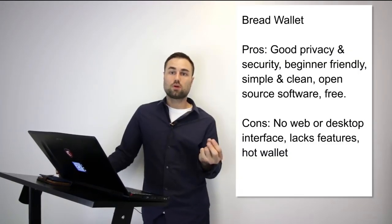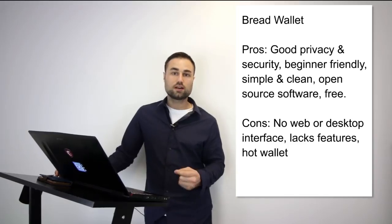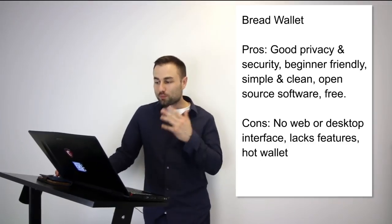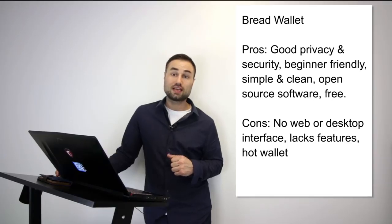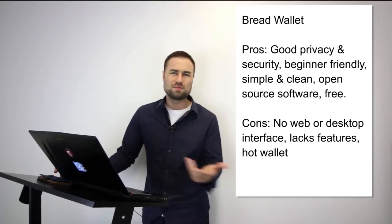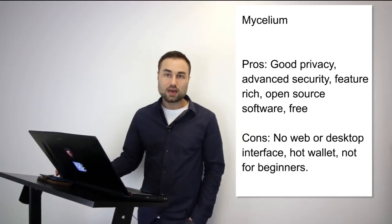Now for the actual recommendations. First is the Bread Wallet — a simple wallet literally made for a child, the user interface is that easy. It's specifically just for Bitcoin. The pros: very good privacy, beginner-friendly, open source, free, simple and clean. The cons: no web or desktop interface, lacks features, and it's a hot wallet with less security. For day-to-day Bitcoin transactions — maybe keeping $500 — it's a great start for beginners.